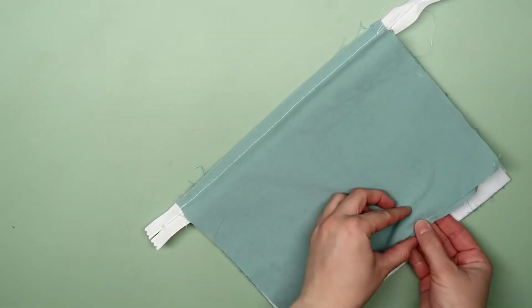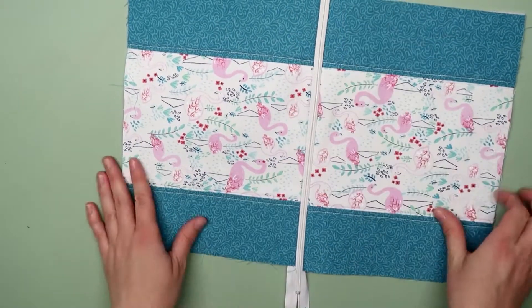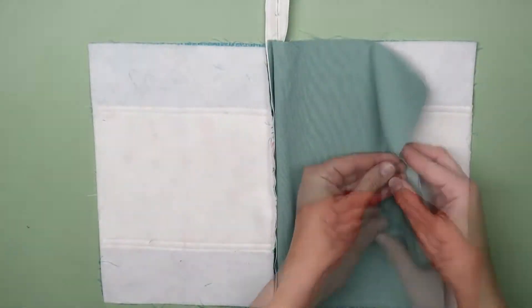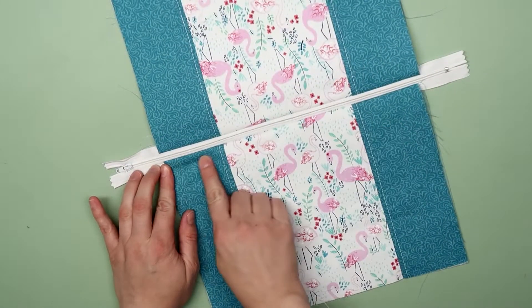Open everything up and put the zipper in the middle with an inner and an outer layer on each side of the zipper. Smooth everything down flat and then top stitch along either side of the zipper.